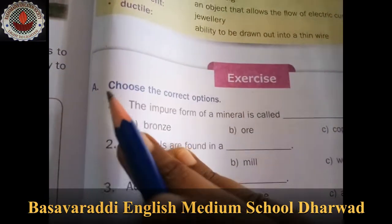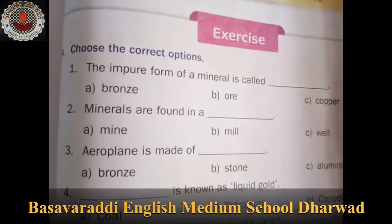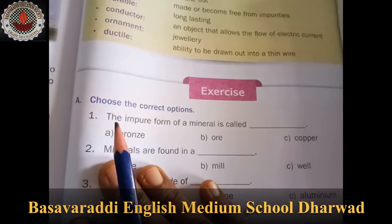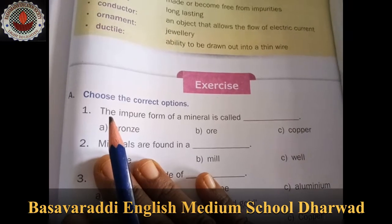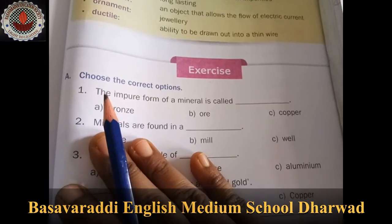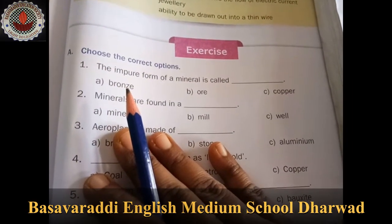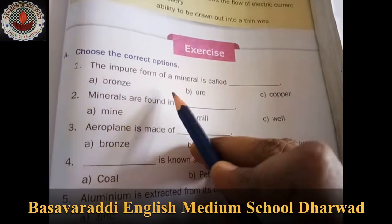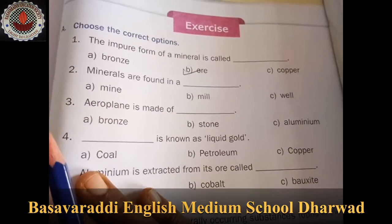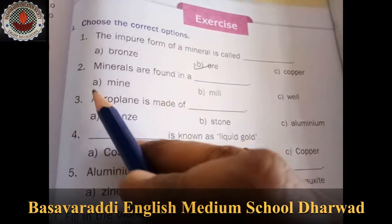Next, the main question, section A: Choose the correct options. Question number 1: The impure form of a mineral is called — bronze or copper? The correct answer is ore. Second question: Minerals are found in a mine, mill, or well? The answer is mine.